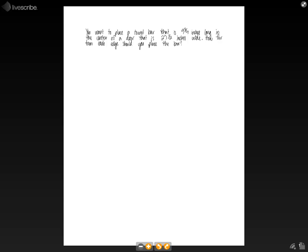The problem says you want to place a towel bar that is 9 3/4 inches long in the center of a door that is 27 1/2 inches wide. How far from each edge should you place the towel bar?